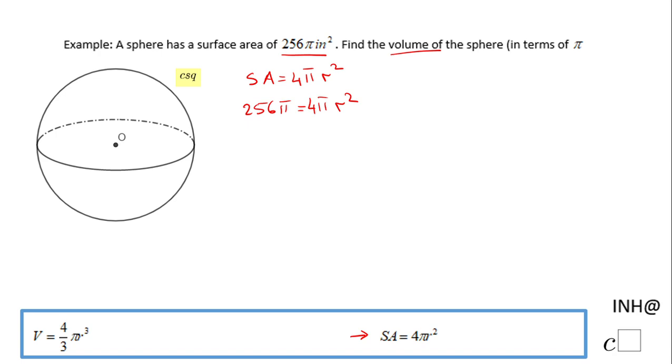The first thing you can do is simplify the π on both sides, and you have 4r² equals 256. The next step is to divide by 4, so I have r² equals 64.